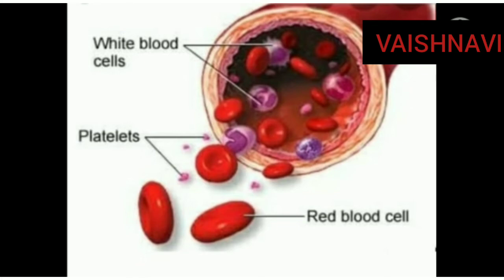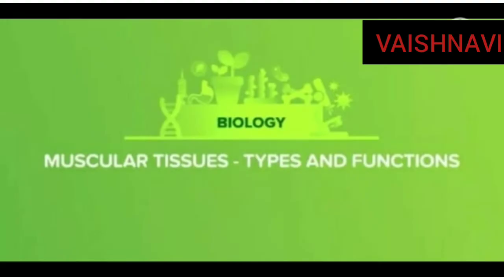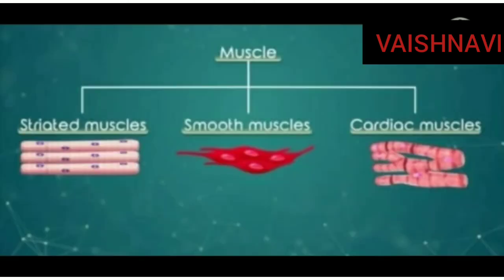Now let us know about muscular tissue. The tissue which is responsible for movements in our body is known as muscular tissue. Muscular tissue is divided into three types: striated muscles, non-striated muscles, and cardiac muscles.